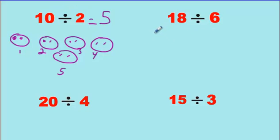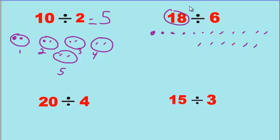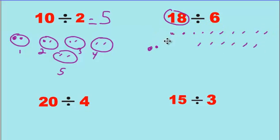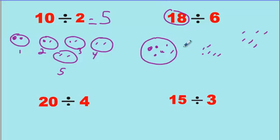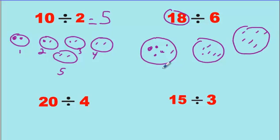Eighteen divided by six. Count out eighteen — one through eighteen. We're going to put them into groups of six — big groups. Put one, two, three, four, five, six together — they're a group, they're a team. Put the next six in a group. And these last six are their own team. We circle them. We have one, two, three groups altogether. So the answer is three. Check: six times three is eighteen. Way to go.